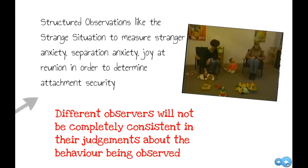If we've got structured observations like Bandura's observation or the strange situation by Ainsworth and Bell, they're supposed to measure stranger anxiety, separation anxiety, joy, reunion, things that determine attachment security. But of course, different observers won't be completely consistent. So there might be high inter-rater reliability, but the fact that there's any unreliability at all is down to the fact that different observers see the thing in different ways.